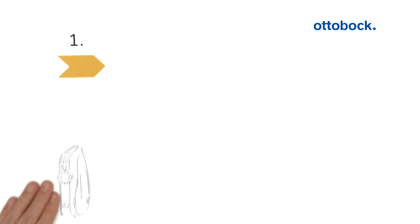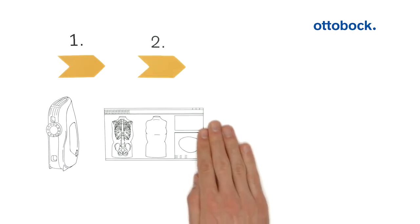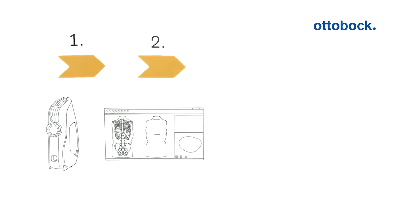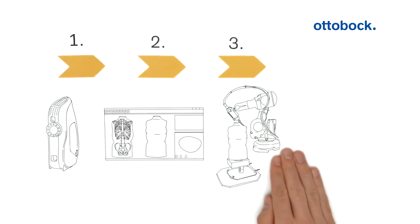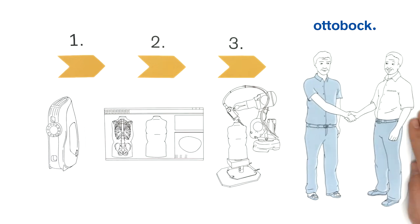Step one: use a scanner to digitize the body part. Step two: use the CAD software to modify the scan. Step three: Ottobock will manufacture the product using the CAM method and provide support if necessary.